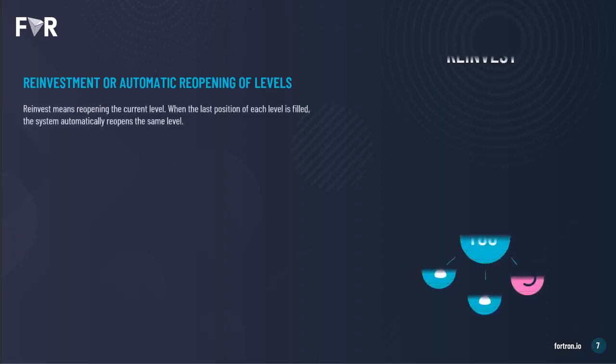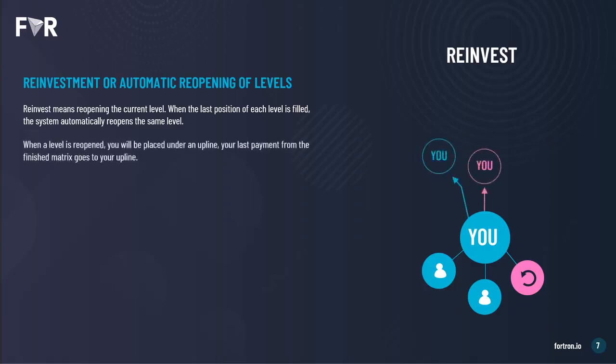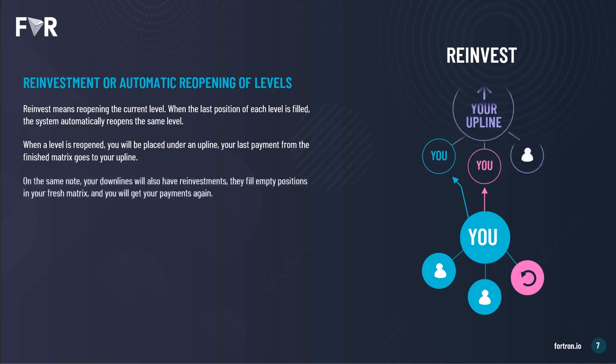Reinvesting means reopening the current level. When the last position of each level is filled, the system automatically reopens that same level. When a level is reopened, you're placed under an upline, and the last payment from the finished matrix goes to that upline. Your downlines will also have reinvestments, so they will fill empty positions in your fresh matrix, and you get your payments again.